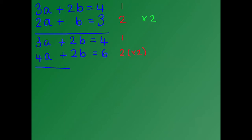The next thing we want to do is subtract equation number 2 from equation number 1. So we've got 3a minus 4a, which gives us minus a. We've got plus 2b minus 2b, which cancels out. We've got 4 minus 6, which gives us minus 2. We're going to divide both sides by minus 1, which leaves us with a equals 2.